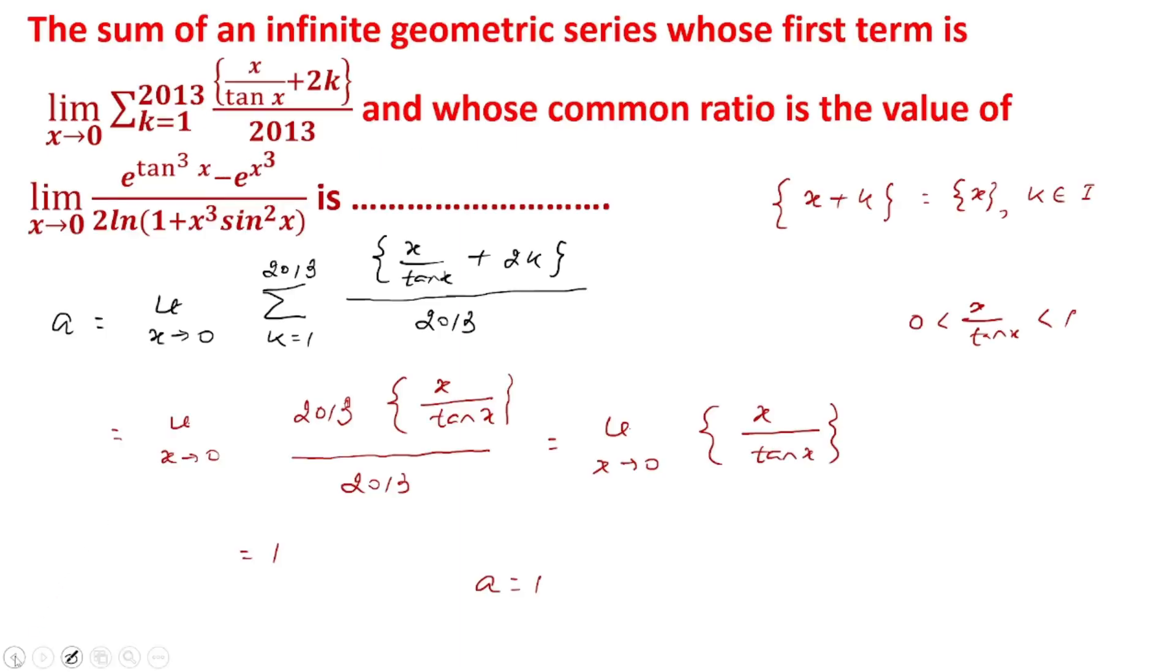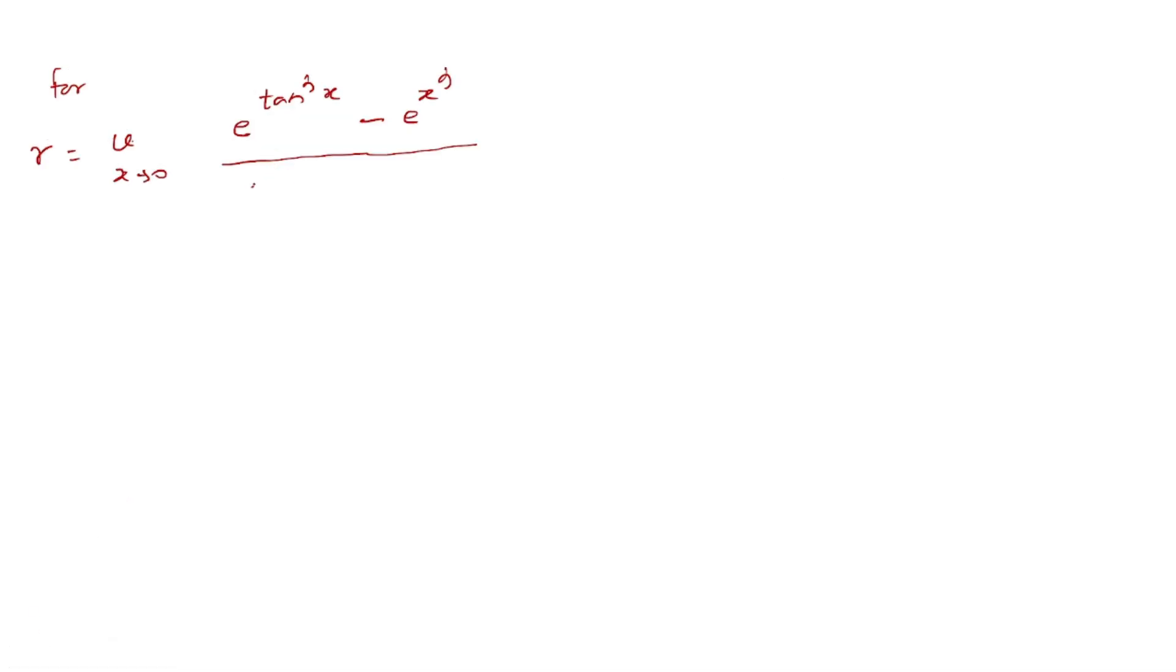For r, we have limit x tends to 0, (e^(tan³x) - e^(x³)) divided by (2 ln(1 + x³sin²x)).